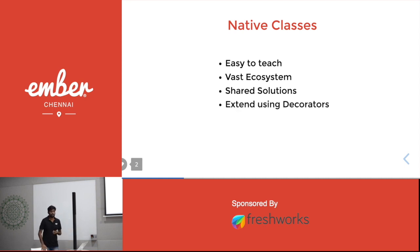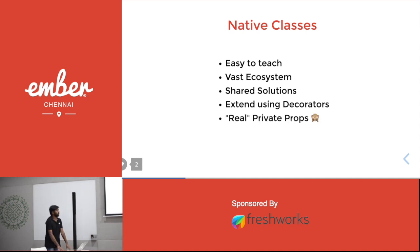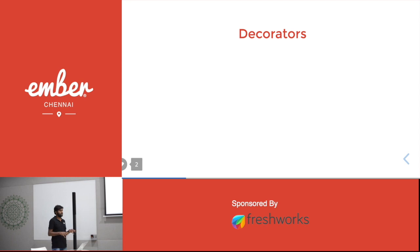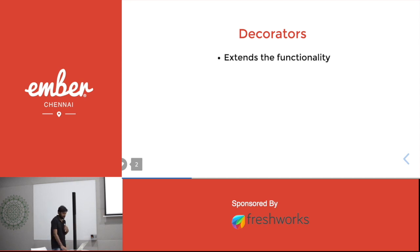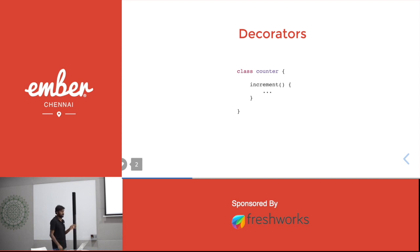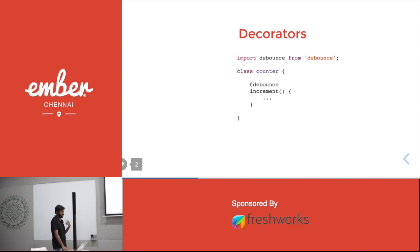We can extend class functionalities and class field functionalities using decorators, and we are going to see about decorators soon. As a bonus, we can use private properties here. Decorators are nothing but logic used to extend the functionality of a class field. For example, in this counter class, if I need to implement a debounce operation for the increment method, I can create a new decorator to implement that logic, so that the debounce decorator can be used anywhere in my app and not tied to this particular method.